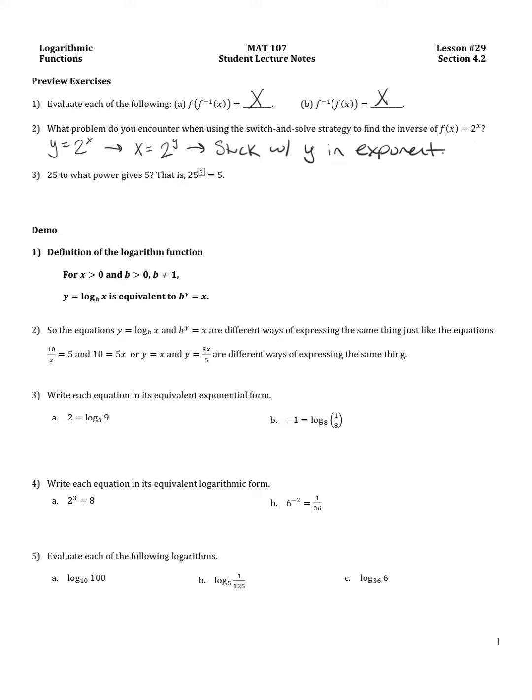Number three, 25 to what power gives 5? That is 25 raised to the what equals 5. Well, it can't be 1 because 25 to the 1 is 25. It can't be 2 because 25 squared is 625. It's going to be smaller than 1. 25 to the 0 is 1.